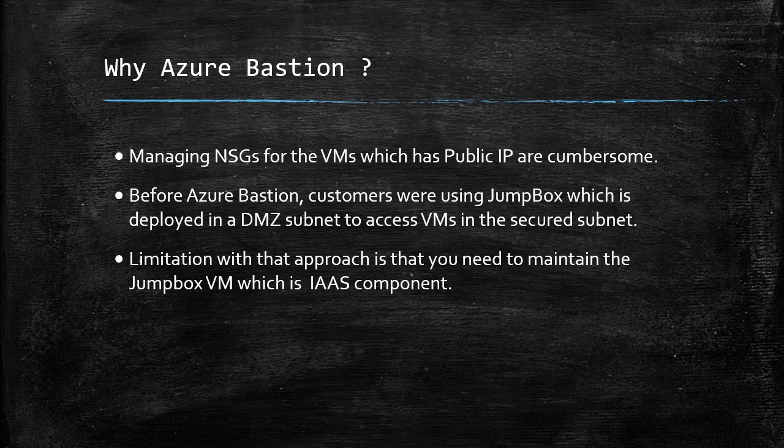Before Azure Bastion, customers were using a jump box deployed in a demilitarized subnet to access VMs in the secure subnet. A jump box is essentially an IaaS virtual machine deployed with a public IP address. Customers would securely RDP to the jump box, and from there RDP to VMs in the secure subnet using their private IP address. The limitation with this approach is the maintenance overhead of the jump box as an IaaS component. In the next video, we'll discuss the architecture of Azure Bastion.